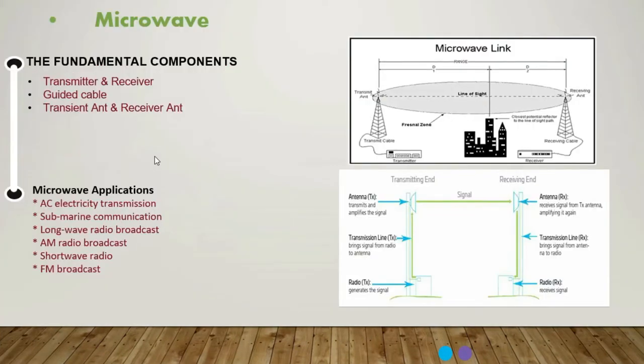Hello, it's me Ammar Hadwal. What are the fundamental components for sending and receiving microwave signals? The first one is the transmitter and receiver, the second one is the guided cable for receiving or transmitting, and the third one is the transmit antenna and receiver antenna, as you can see here in this graph.